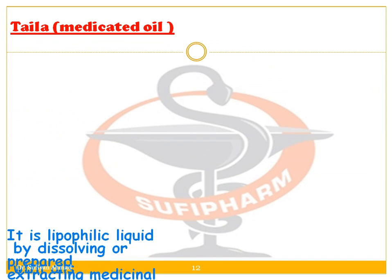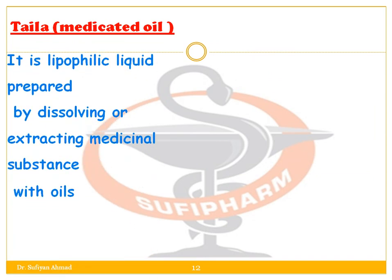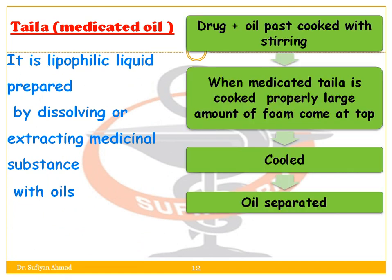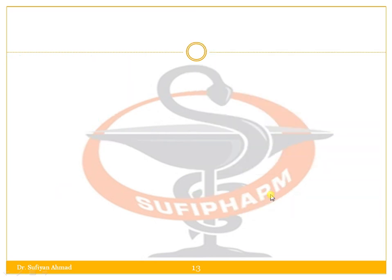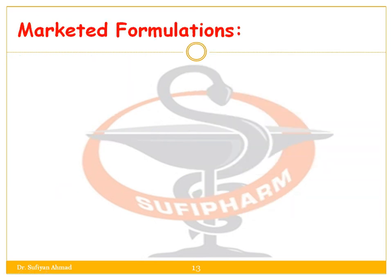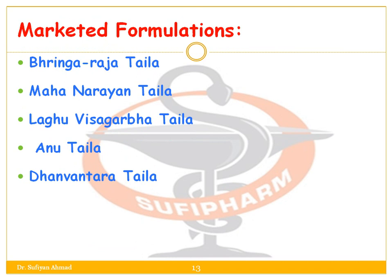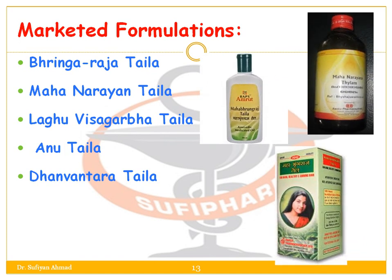Next is Taila — it is a medicated oil. It is a lipophilic liquid prepared by dissolving or extracting medicinal substances with oil. The drug and oil paste are cooked with stirring. When the medicated Taila is cooked properly, a large amount of foam comes to the top, then it is cooled and the oil is separated. Marketed formulations include Bhringraj Taila, Maha Narayan Taila, Laghu Taila, Anu Taila, and Dhanvantara Taila.